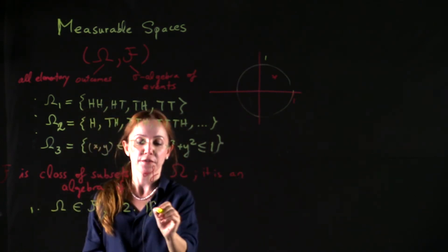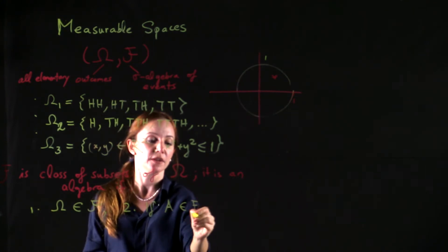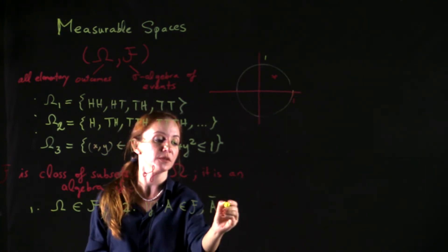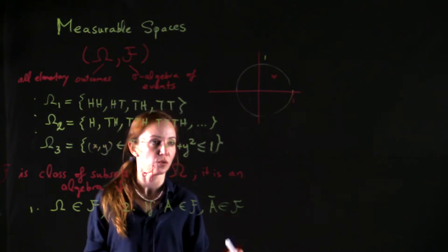It is an algebra if the following three things are satisfied. Number one, omega is an element of F. Two, if a set A is in F, then A complement must be in F too. It's closed under complementation.